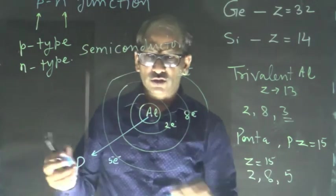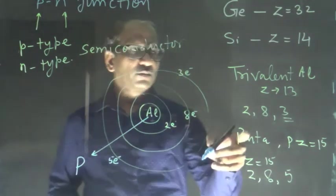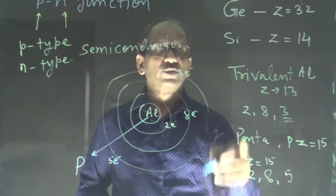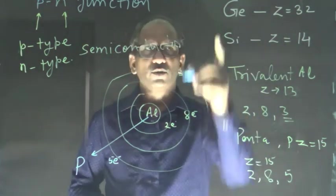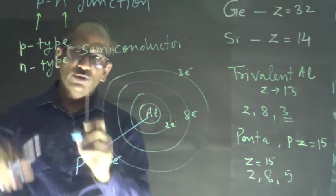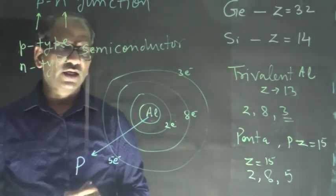So this is the electronic configuration of the trivalent and pentavalent impurity. Silicon 14 and Z is equal to 32 for germanium. Now the question was related to the P-type and N-type semiconductor.